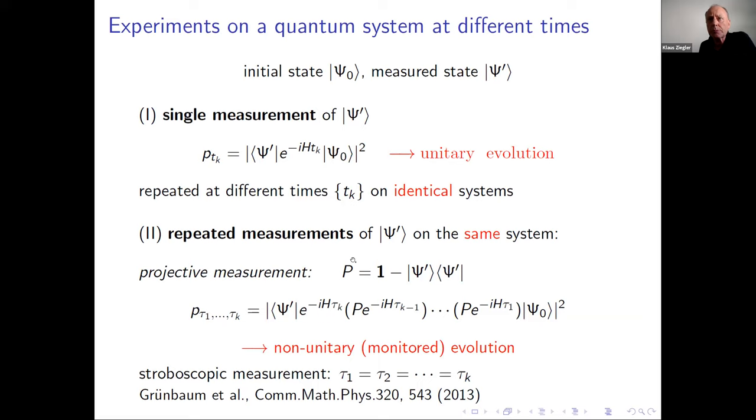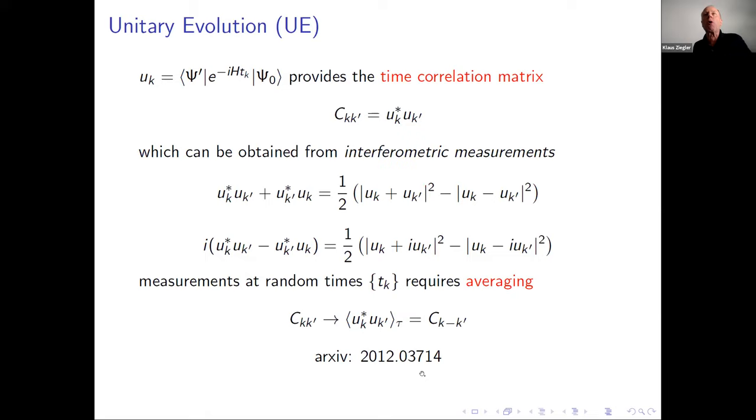An alternative approach is to do repeated measurements on the same system through projective measurement P. Instead of having unitary evolution, we have to consider this expectation value modular square. This is not a unitary evolution anymore, it's non-unitary because of the projectors. This is usually called the monitored evolution. If you do stroboscopic measurements where all time intervals are equal, there is a nice theory introduced by Grünbaum et al. based on complex analysis.